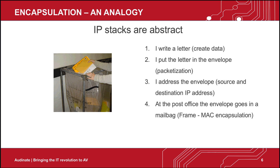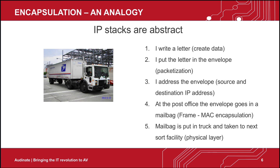The envelope containing the letter is sorted several times through the system and it's not opened. This is just like the source and destination IP addresses in encapsulation that never change. The mail bag that the envelope is carried in changes several times, just like the MAC address. The mail bag may travel on a train, airplane, boat, and van — this is like the physical layer. When the last mail bag arrives at the destination, the envelope is unpacked. This is similar to a packet being removed from the frame. The envelope is then handed to the recipient and opened. This is like the data being removed from the packet.